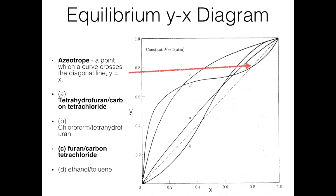This is the equilibrium mole fraction in gas versus mole fraction in liquid, or y-x diagram, for four different systems. System A, tetrahydrofuran and carbon tetrachloride, has an equilibrium curve close to the one-to-one y-x line. System B, chloroform and tetrahydrofuran, has a curve below the one-to-one line in part and above in another part. The furan-carbon tetrachloride system is above the one-to-one y-x line, while ethanol-toluene is above at one point but below the y-x line at higher x mole fraction values.